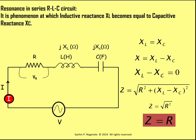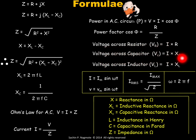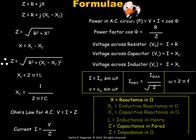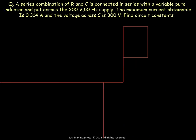With this information, we can easily solve the problem of resonance in a series RLC circuit. We must know the formulas: voltage across resistor is V_R = I × R; voltage across capacitor is V_C = I × XC, where XC is capacitive reactance; voltage across inductor is V_L = I × XL, where XL is inductive reactance. And XL = 2πFL and XC = 1 / (2πFC).